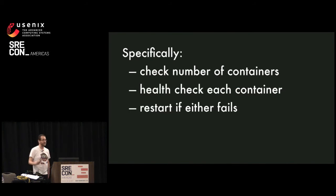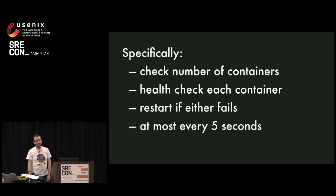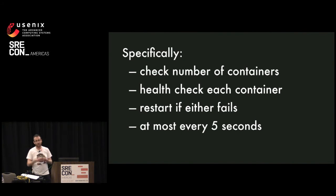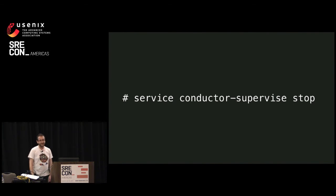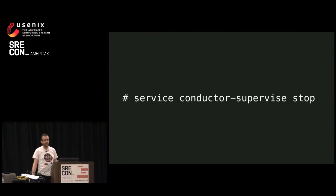So if either of those checks fail, we perform a restart — provision new containers, kill off the old ones — and we rate limit that to happen at most every five seconds. Every five seconds you have a check; if there is an ongoing restart, all other checks are deferred. And because these things are nicely layered, we supervise Conductor Supervise up in Upstart, so that if anything goes wrong in our code, we can stop Conductor Supervise and say 'stop spinning up containers, we've got a bug.' This was a property that for us was missing from Docker's restart policies.